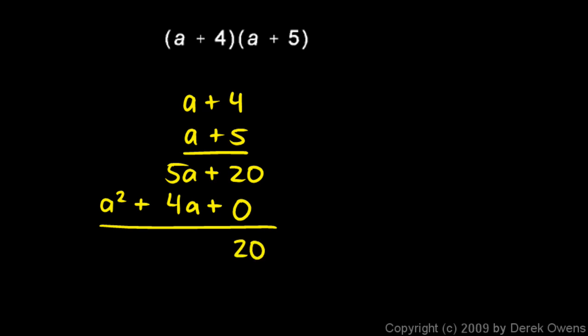And then I'll draw a line and I'll add these. 20 plus 0 is 20. 4a plus 5a is 9a, and then I have my a squared out here. So that's my answer: a squared plus 9a plus 20.